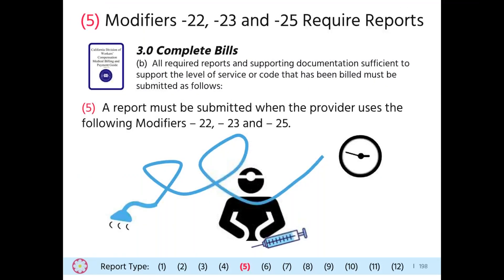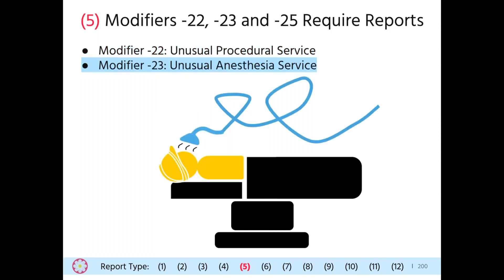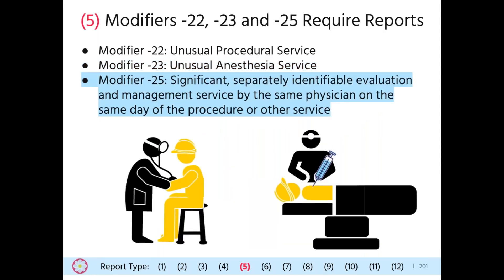The fifth instance requiring a report is when a bill lists modifier 22, 23, or 25. Modifier 22 is appended to a CPT code where there is an unusual procedural service — a report is required to explain the unusual circumstances. Modifier 23 is for unusual anesthesia services and requires explanation in a report; use it only with anesthesia CPTs. When modifier 25 is appended to an E&M CPT code, a report must address the reason — modifier 25 is used when a physician performs a procedure on the same day as the E&M service.